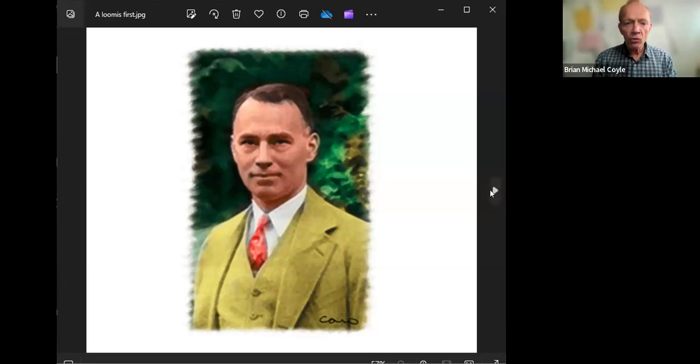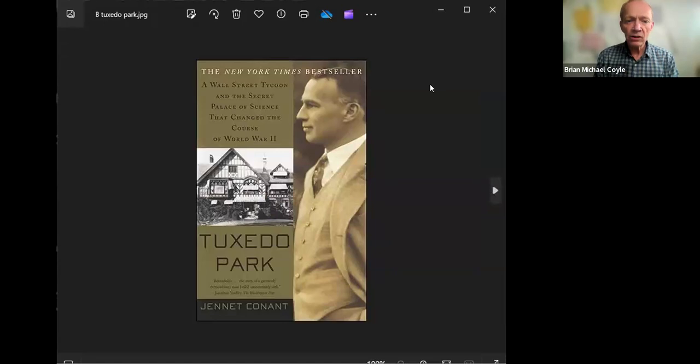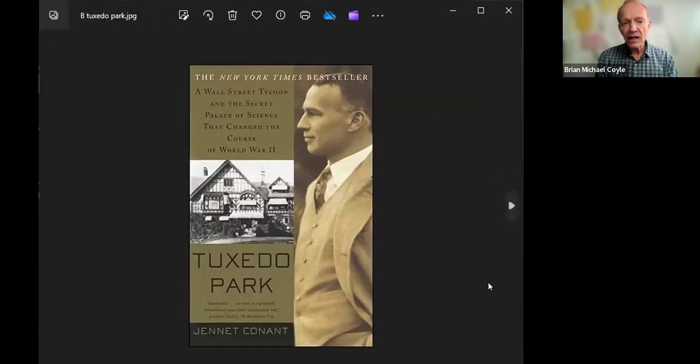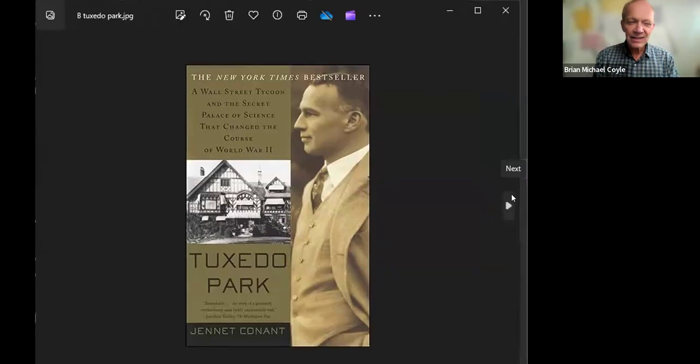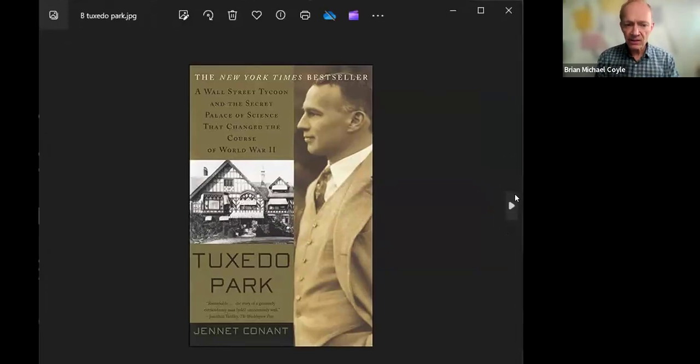There is one book written about Loomis, Tuxedo Park, named for the secluded place his house was in. It's by a member of his extended family, Conant, who has a limited scientific background, so it covers many episodes but isn't very deep.